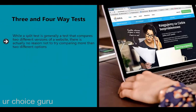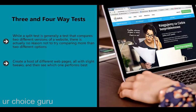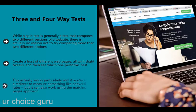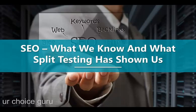While a split test generally compares two different versions of a website, there is actually no reason not to try comparing more than two different options. Create a host of different web pages all with slight tweaks and see which one performs best. This works particularly well if you're using a redirect to measure something like conversion rates, but it can also work using the matched pages approach. In theory this can help save time, though it can also make the whole process more complicated.